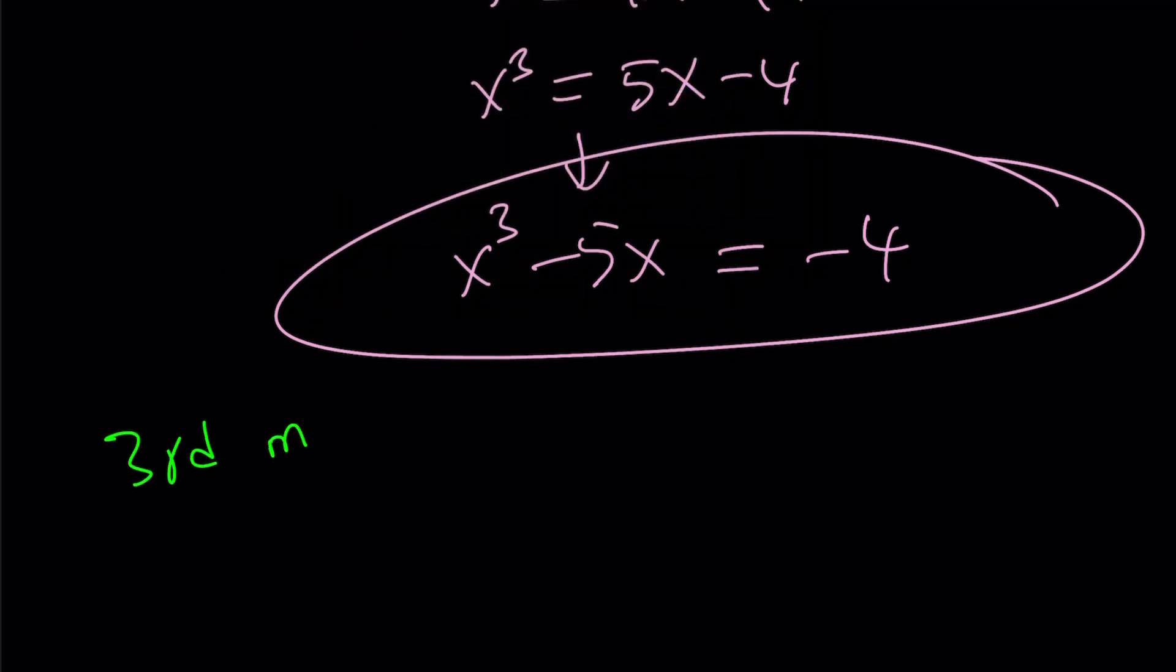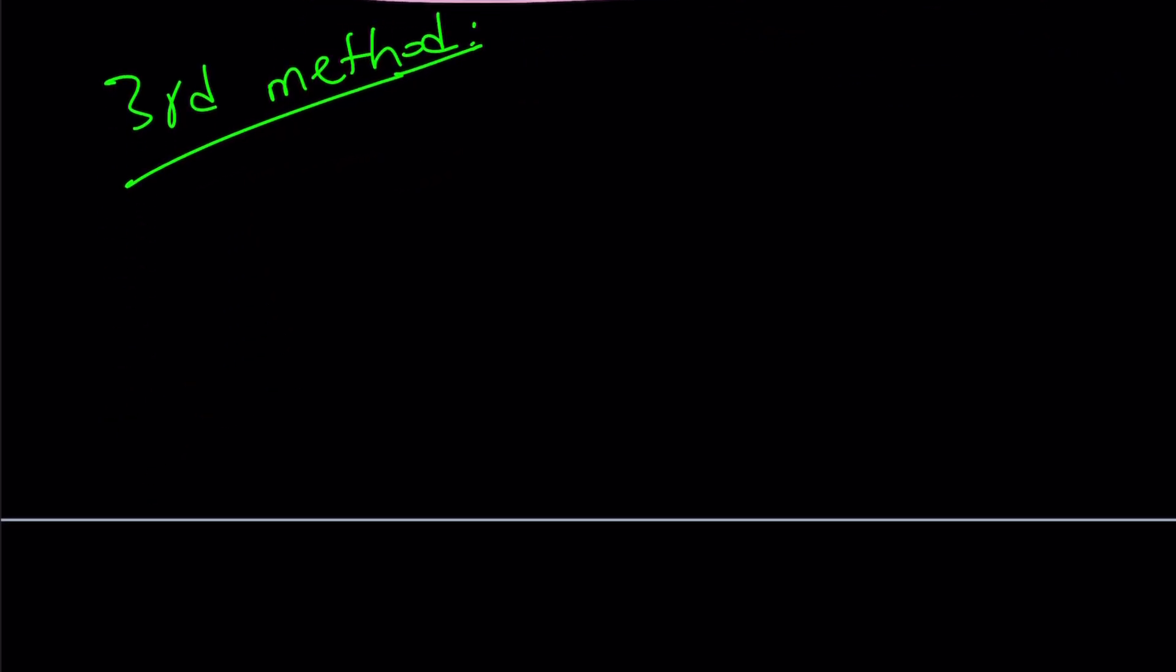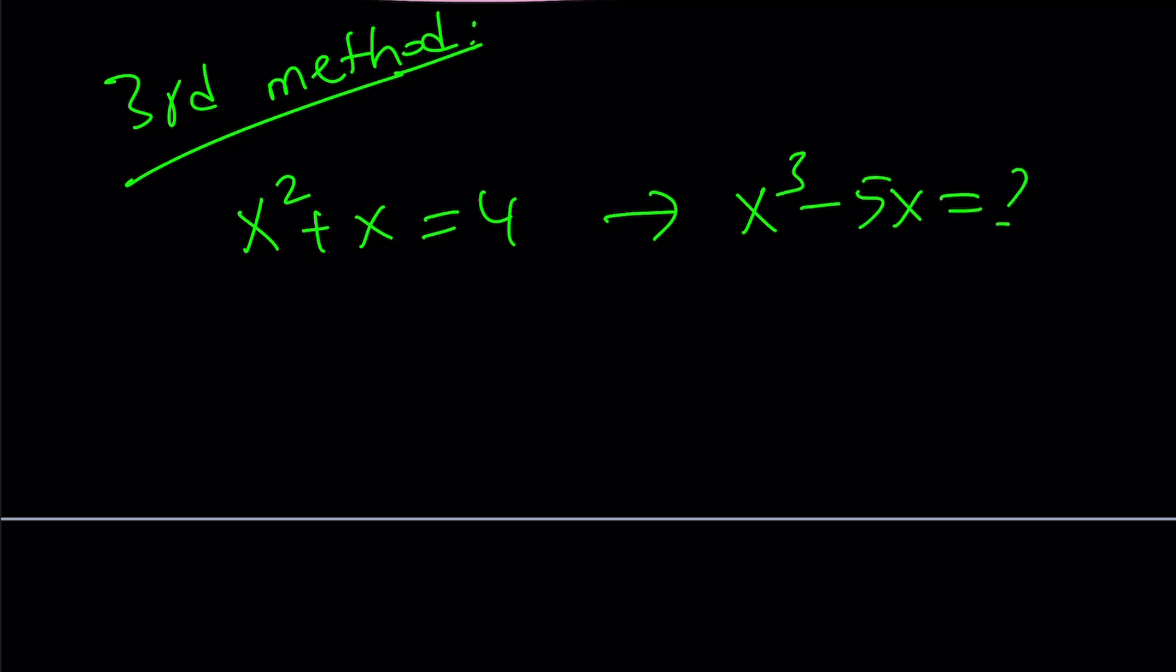And then we'll look at the fourth method. And then at the end, I'm going to show you a really cool graph of two functions. Great. Here's how our third method works. And before I start the third method, let me rewrite the original problem. So this is given. And I'm trying to evaluate this one.